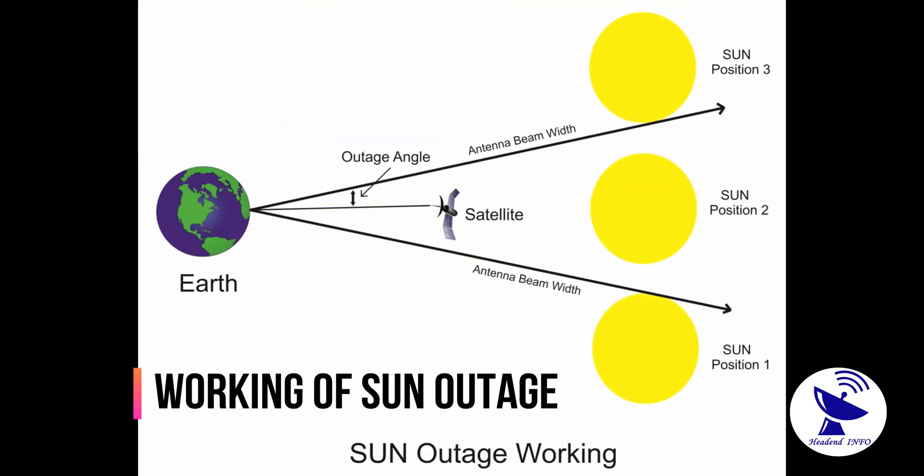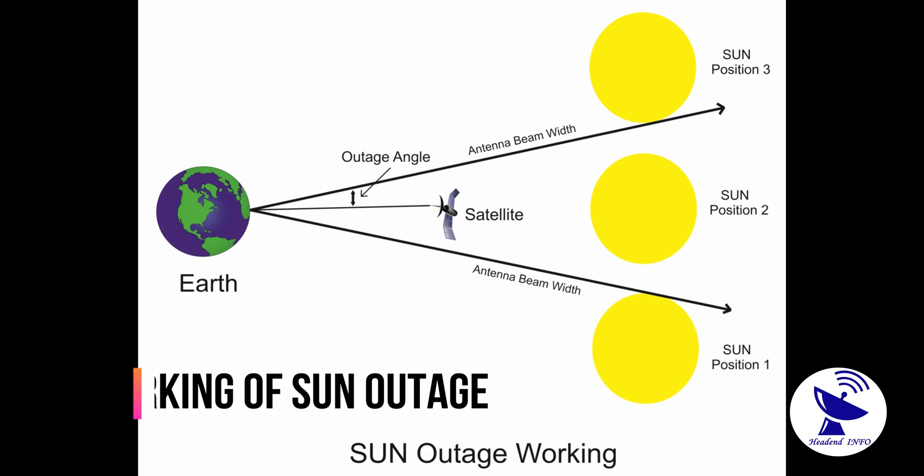Let's now discuss about the working of Sun Outage. As shown in the figure, there are three positions of the Sun. In the first position, the overall signal strength is good. But after some time, when the Sun reaches its second position, the overall signal strength gets low or even nil, resulting in freezing of services. Because in this position, the Sun is directly aligned with the satellite and receiving antenna, resulting in losses in the signal due to interference of the Sun's emitted energy with the satellite carrier signal. Again, when the Sun reaches its third position, the overall signal strength gets normal and our services start to run properly.